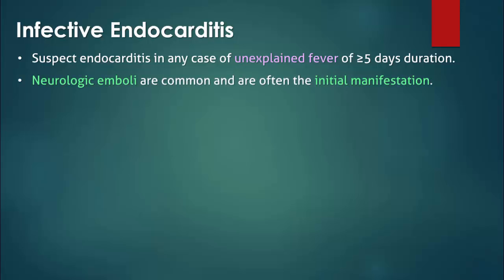Stroke is often the initial manifestation of infective endocarditis. Embolization to other organs also occurs — for example, to the spleen causing splenic infarction. Janeway lesions, which are well known despite being rare, are due to emboli to the hands and feet.